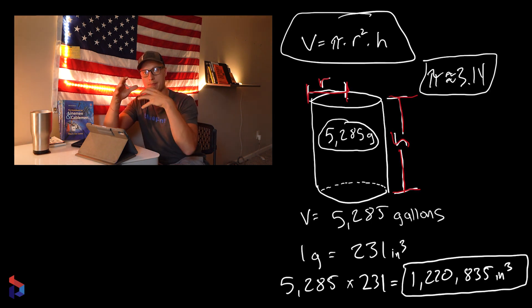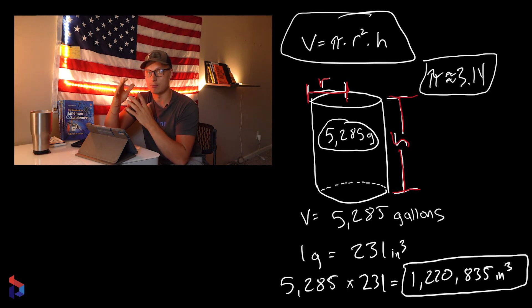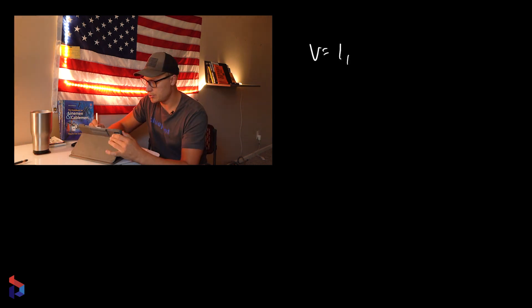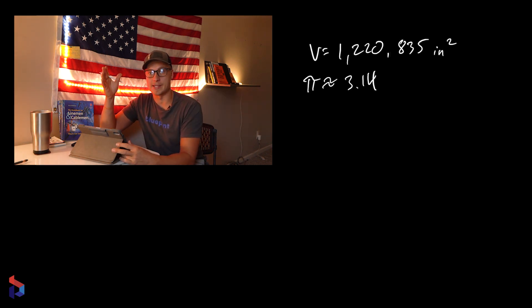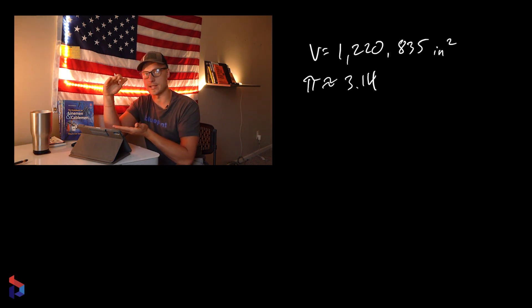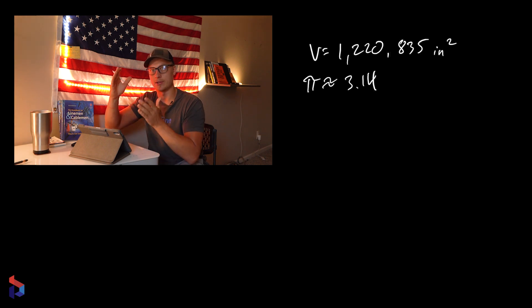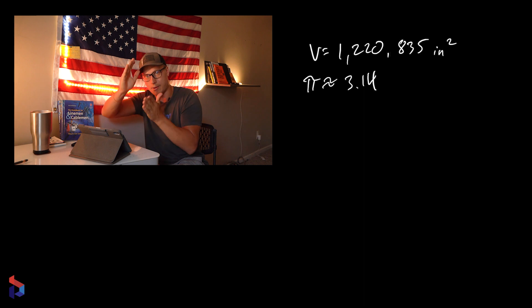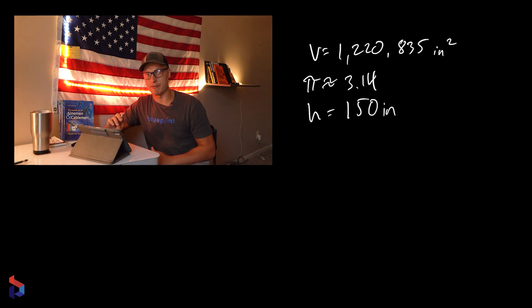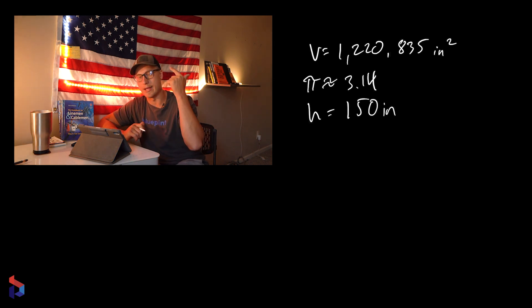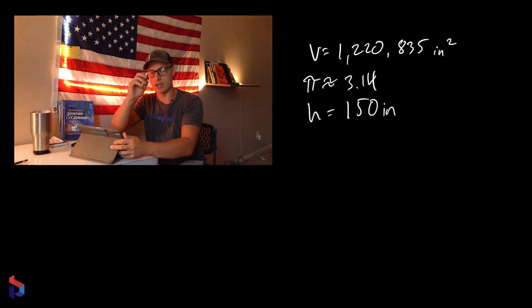We're going to have to rearrange this volume equation using simple algebra — Algebra 1 — to figure out what the radius equals. Let's say we want the cylinder to be taller than it is wide, so we'll give it a height of 150 inches. Now we have three values: volume = 1,220,835 cubic inches, pi = 3.14, and height = 150 inches. All we need to find is the radius.